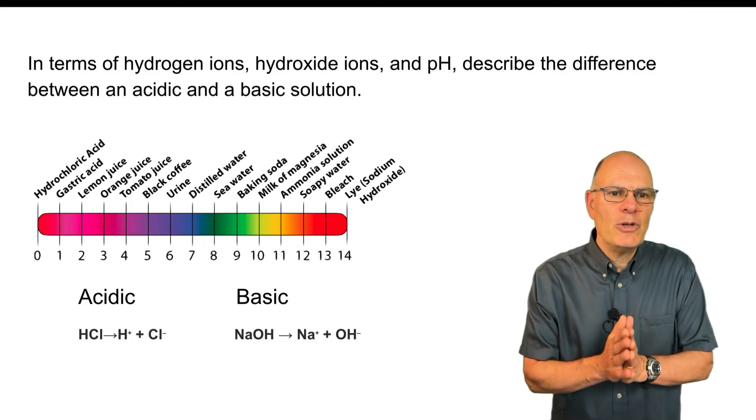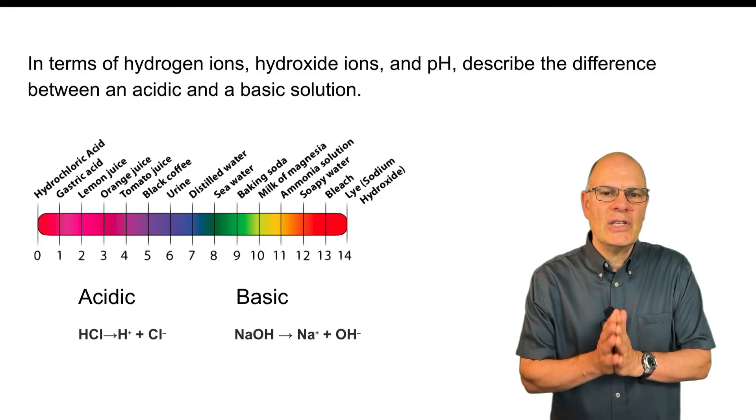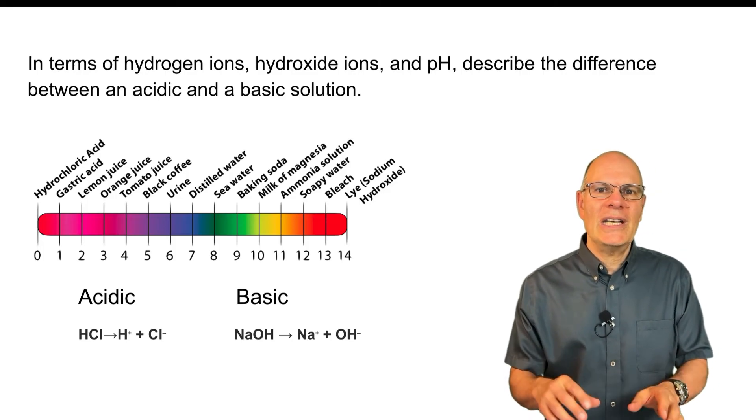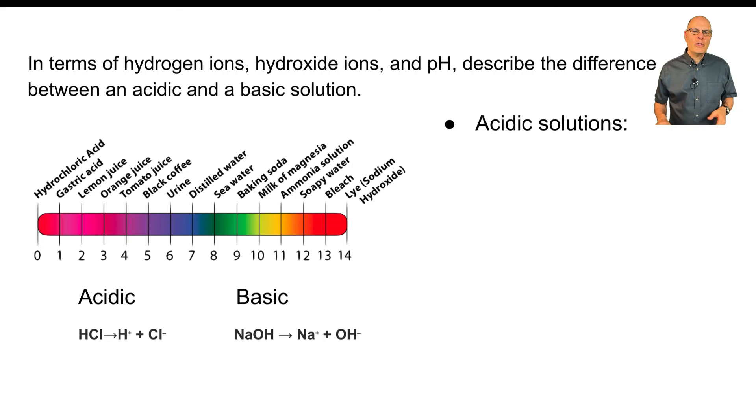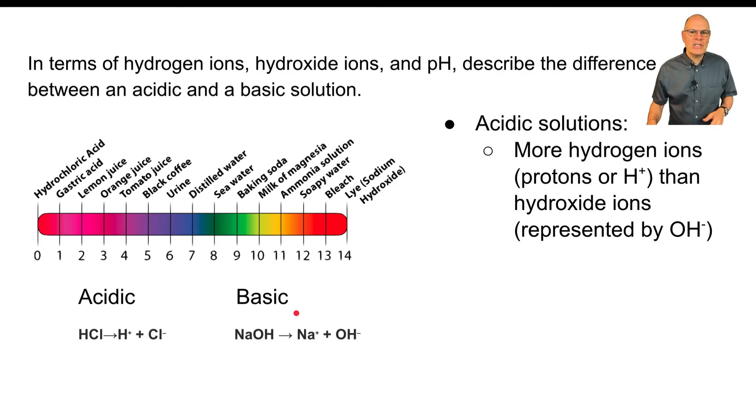In terms of hydrogen ions, hydroxide ions and pH, describe the difference between an acidic and a basic solution. First thing to note is that acidic solutions are solutions that have more hydrogen ions. Here's a hydrogen ion over here than hydroxide ion. That's represented by OH over here. So if you dissolve this in water, you wind up having lots of hydrogen ions, and that pushes the pH down. The pH is below 7.